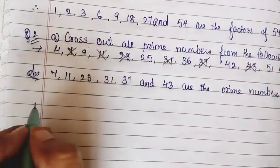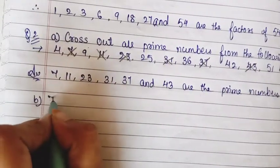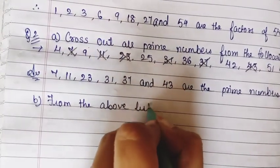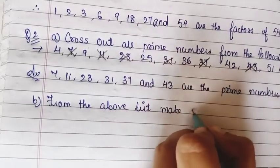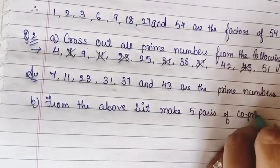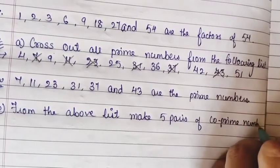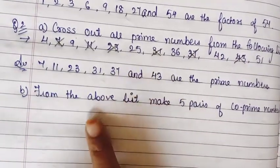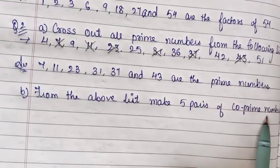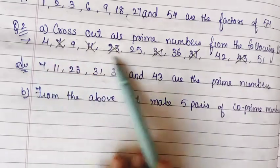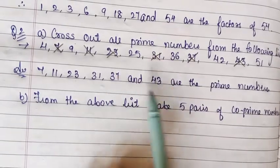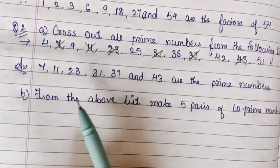Now there is one more question, Part B: From the above list, make 5 pairs of co-prime numbers. From this list we can take pairs. Now what are co-prime numbers? The numbers which have only one common factor, that is 1, and no other common factor.